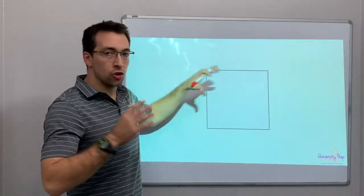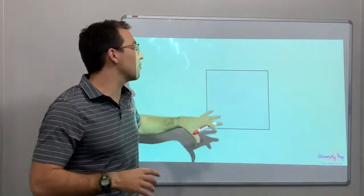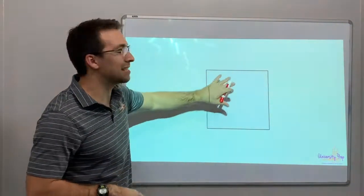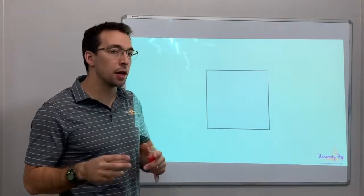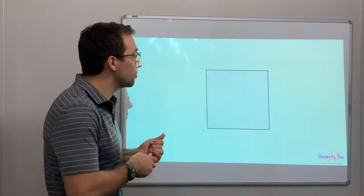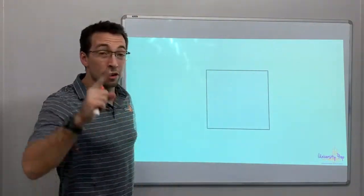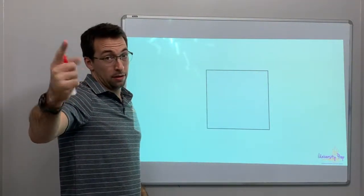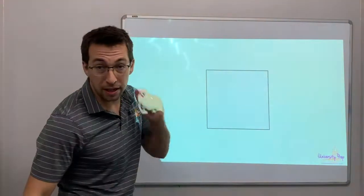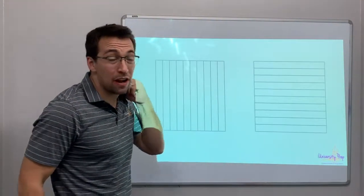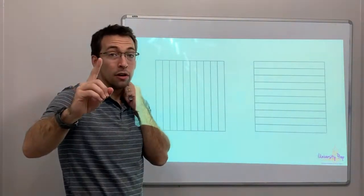Anytime you have a square, a square is going to represent one, and you can think about this as a block. Our number system is built on base ten blocks, or a base ten model. So this square equals one. Now, again, I always talk about money. What happens if you divide one dollar into ten?